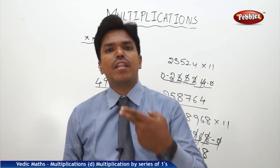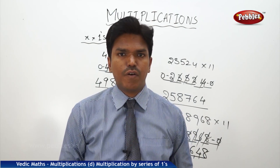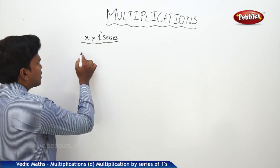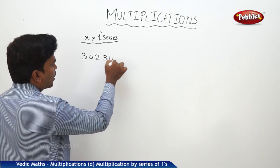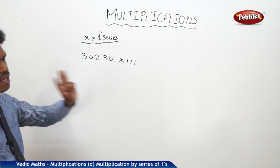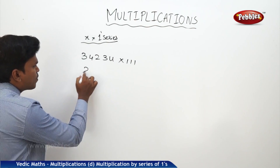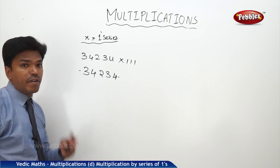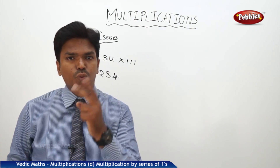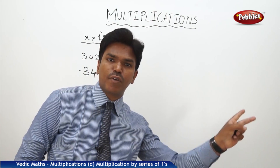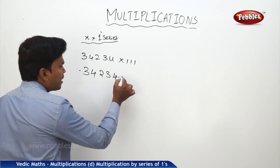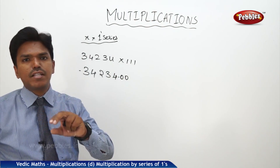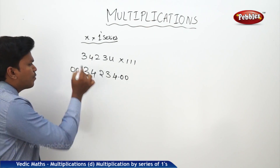Now we have seen multiplication by 11. Now we will see multiplication by triple 1, that is 111. If I want to multiply a number by 3 ones, in the same way drop the given number as it is. Since there are 3 ones, make it one less — that is 2. So two zeros after the number as well as before the number you need to write.